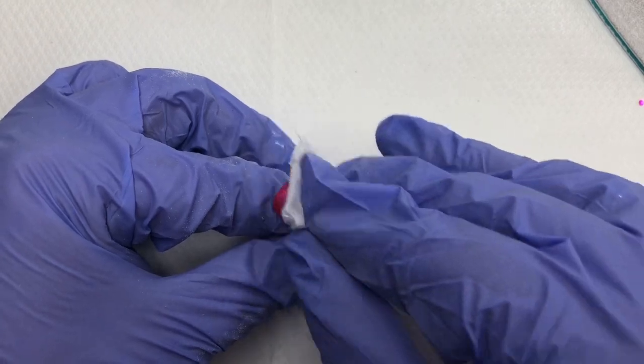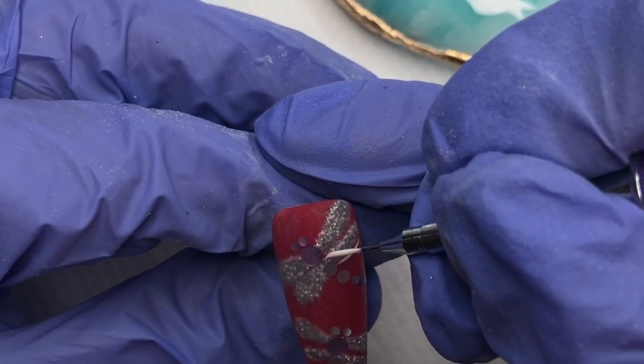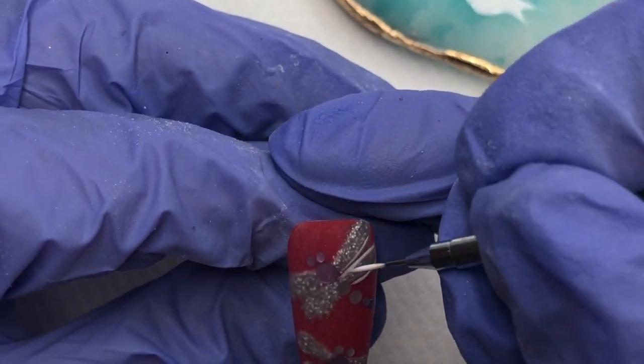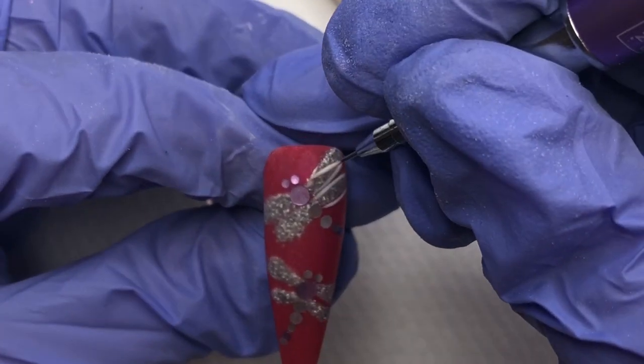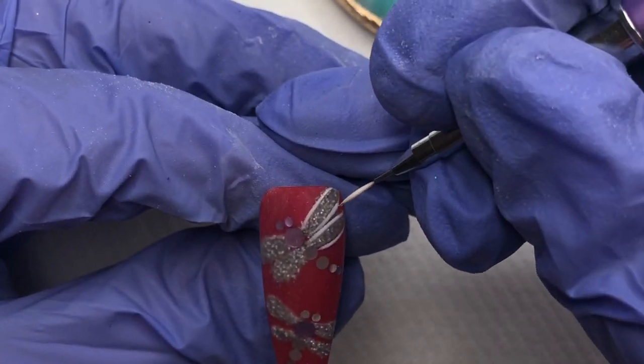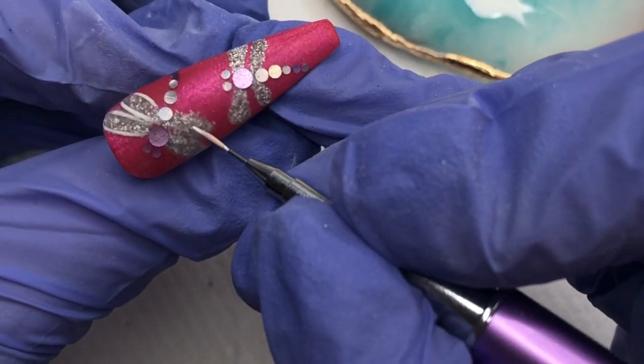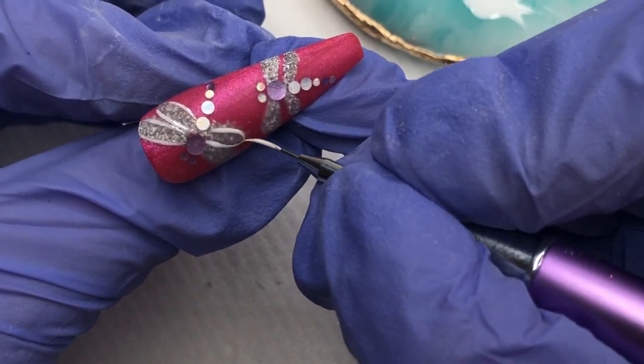Okay so at this point I've actually filed and buffed and that was me there just giving everything a really good clean to make sure all the dust was off. So using that little blob of white gel polish that I have left over, I'm just now going around the glittery sort of wing area and just kind of like highlighting and defining those with the white gel polish.